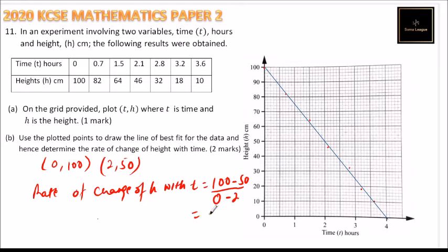This will be 50 divided by minus 2, which is equals to minus 25.